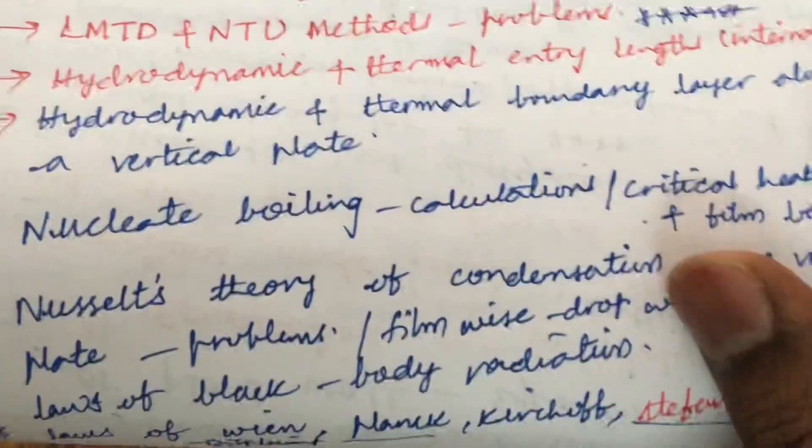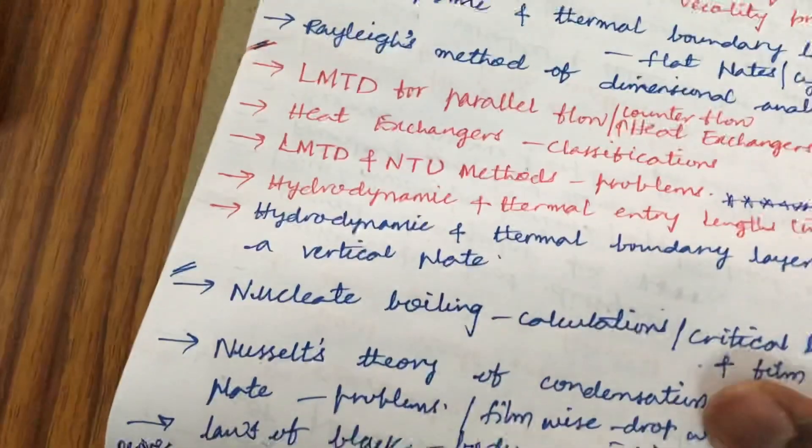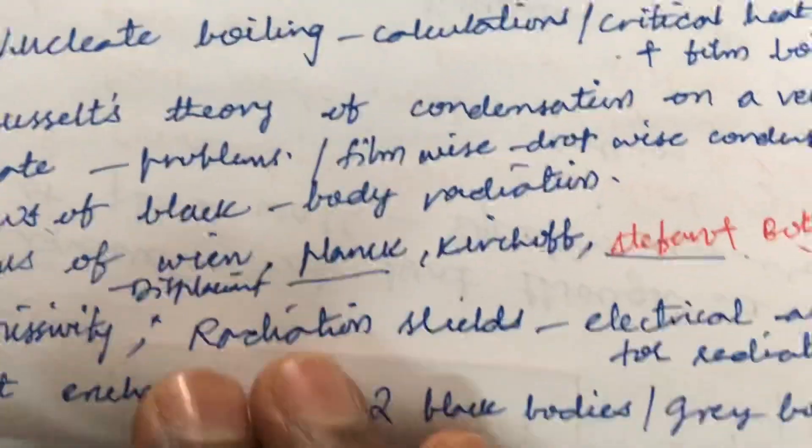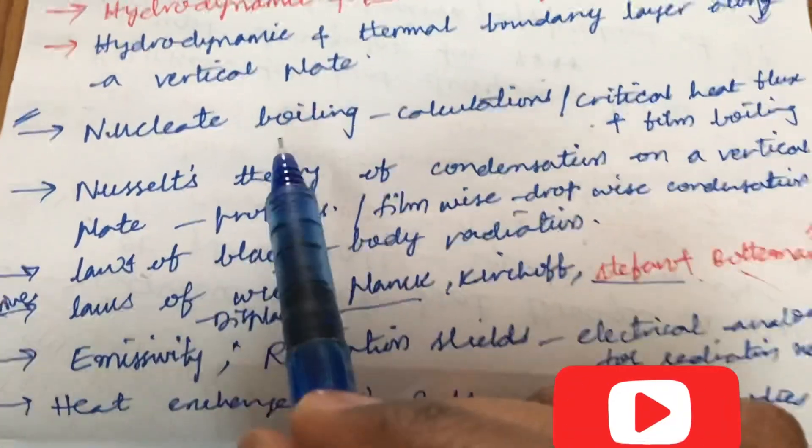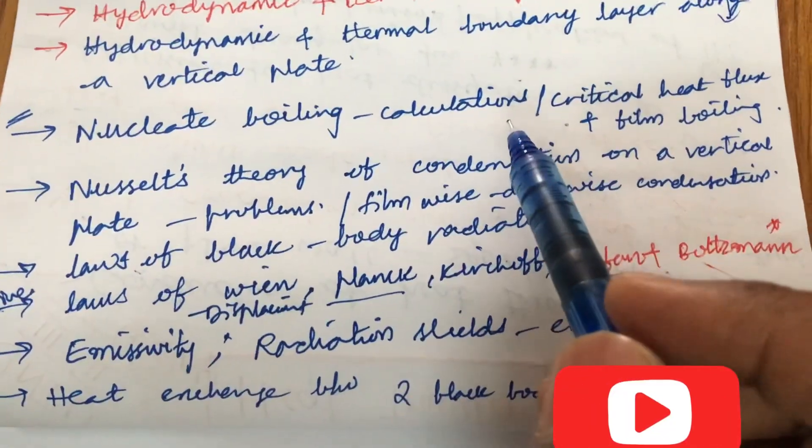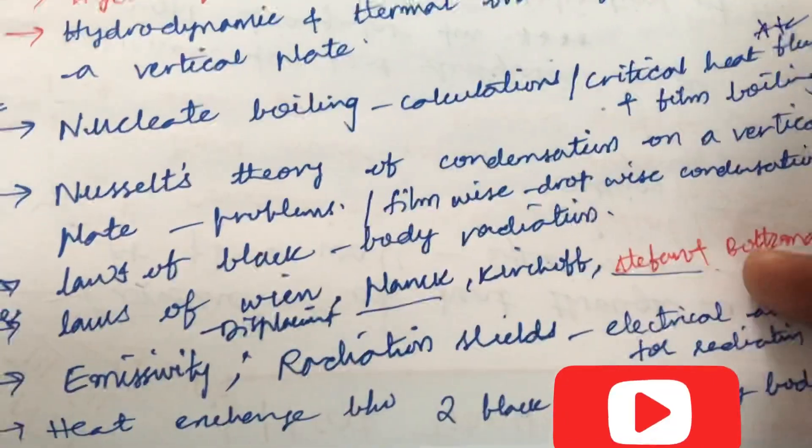Now I am jumping to unit 5. It is also very lengthy in its structure. It is all about nucleate boiling and its calculation as well as critical heat flux. And form film boiling is also one of the very important questions.